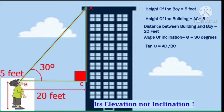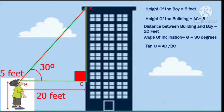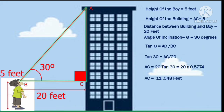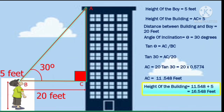We can say that tan 30 is the opposite side upon the adjacent side, that is AC upon BC. Substituting all the values, we find that AC is 11.548 feet. But the height of the building is going to be AC plus your height, so it will be 16.548 feet. I hope you understood the concept that is used to measure heights of buildings and other structures.